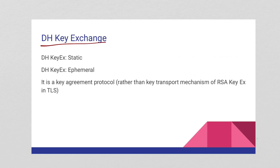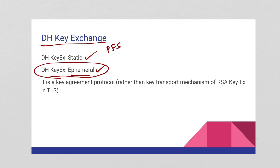The Diffie-Hellman key exchange can be divided into two types. The first is called static key exchange and the second is called ephemeral key exchange. Static means it always uses the same key. Ephemeral means for every single connection it will choose a completely different key — the word ephemeral means temporary. In reality, ephemeral is the most popular one because static key exchange does not provide a property called perfect forward secrecy. RSA key exchange also does not provide perfect forward secrecy, whereas Diffie-Hellman ephemeral key exchange does.